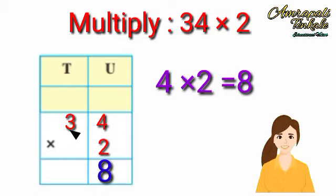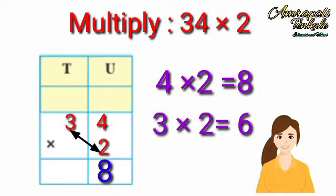Now, multiply the 3 in the 10th place by 2. Two 3s are 6. Write these 6 under the line in the 10th place. The product is 68.